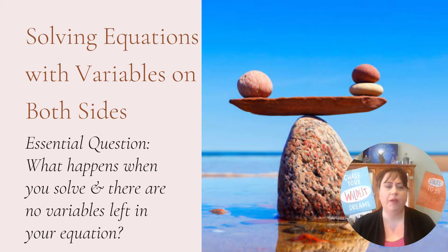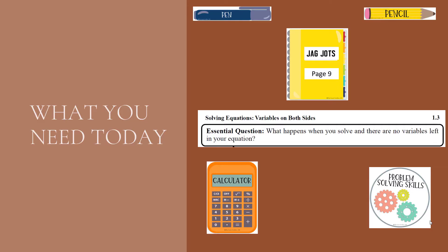What happens when you solve an equation and suddenly you have no variables left in your equation? So let's look at what you need today. You need something to write with, a pen or a pencil, your jotter or jots. It should say 1.3 at the top, but make sure your essential question is what happens when you solve and there are no variables left in your equation. A calculator might be handy either on your computer or your phone or even a standalone, and as always bring those problem solving skills so that you can think critically about what we're doing.